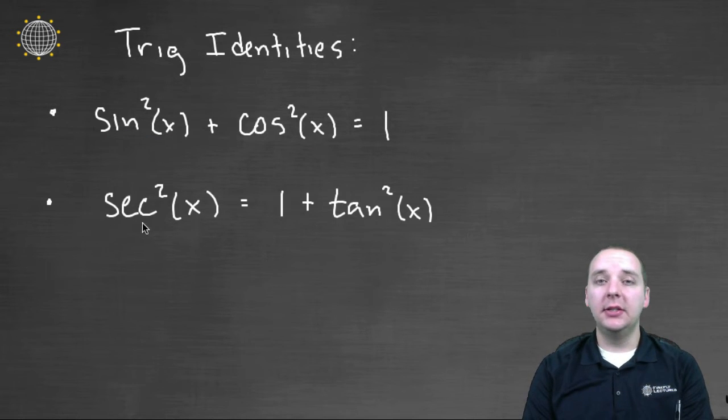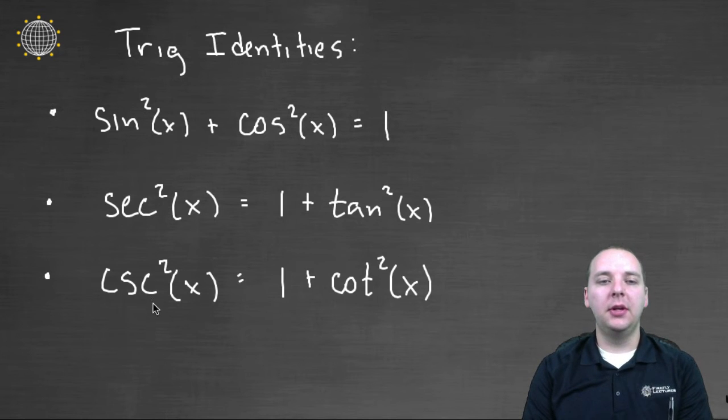Likewise, secant squared equals one plus tangent squared, and so you can convert secants into tangents if you need to. And cosecants can be converted into cotangents or vice versa using this trig identity. So all three of those are very important.